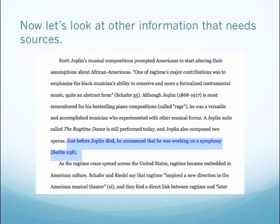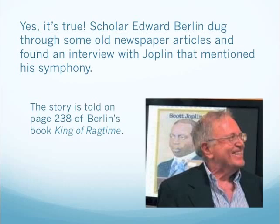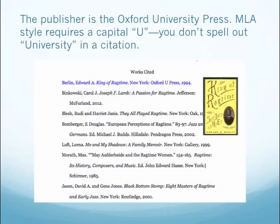Now let's look at other information that needs sources. Just before Joplin died, he announced that he was working on a symphony. No traces of a symphony by Scott Joplin have been found — but is the story true? Yes, it's true. Scholar Edward Berlin dug through old newspaper articles and found an interview with Joplin that mentioned his symphony. The story is told on page 238 of Berlin's book, King of Ragtime. The publisher is Oxford University Press — MLA style requires a capital U, and you don't spell out 'university' in a citation.